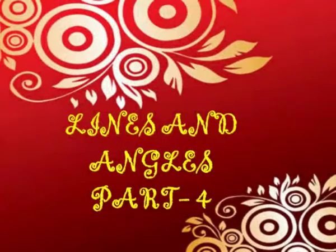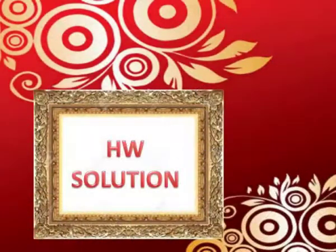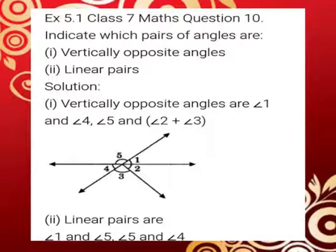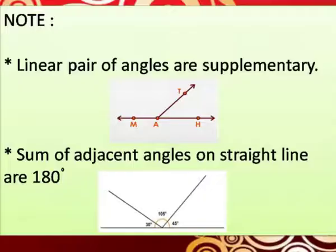Hello students, welcome back to the next session on Lines and Angles. In the previous video we had started from question number 6 of Exercise 5.1 and completed up to question number 9. I had given homework — the solution is attached for you to check your answers. Before we start from question number 11, note down: a linear pair of angles are supplementary, and the sum of adjacent angles on a straight line is 180 degrees. We will be using these notes in the following questions.